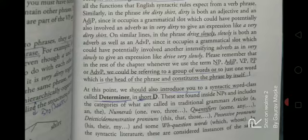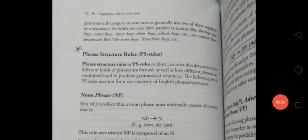These are found inside noun phrases and include the categories of what are called in traditional grammar articles (that is, a and the), numerals (one, two, three, hundred), quantifiers (some, any), deictic or demonstrative pronouns (this, that, those, these), possessive pronouns (his, their, my), and some wh-question words (which food).